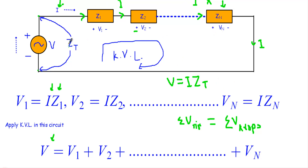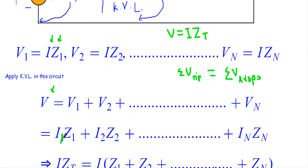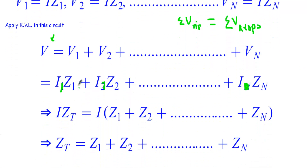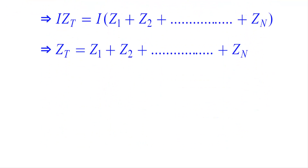We can reduce all impedances to a single equivalent impedance ZT without changing the total current or total voltage in the circuit. Substituting V1 = IZ1, V2 = IZ2, up to Vn = IZn into V = IZT, and cancelling I from both sides, we get: ZT = Z1 + Z2 + ... + Zn. The total impedance is the sum of the individual impedances.